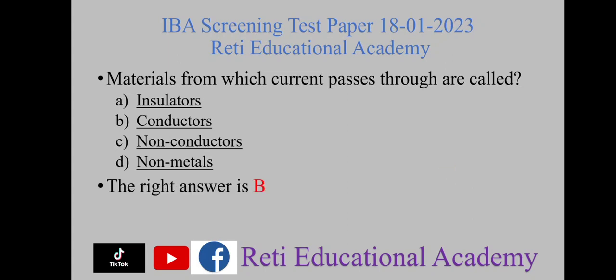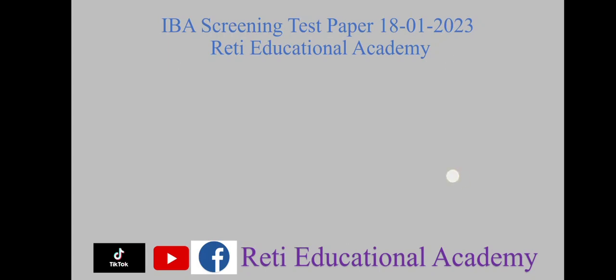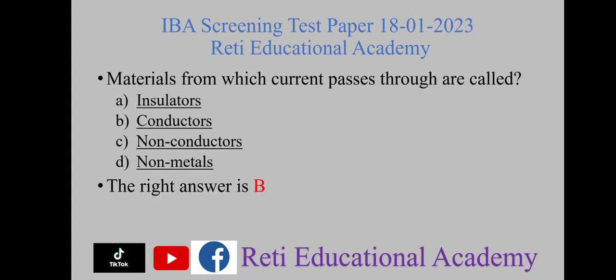Materials from which current passes through are called — A) insulators, B) conductors, C) non-conductors, D) non-metals. The right option is B) conductors. For more videos and job preparation, subscribe to the Educational Academy YouTube channel.